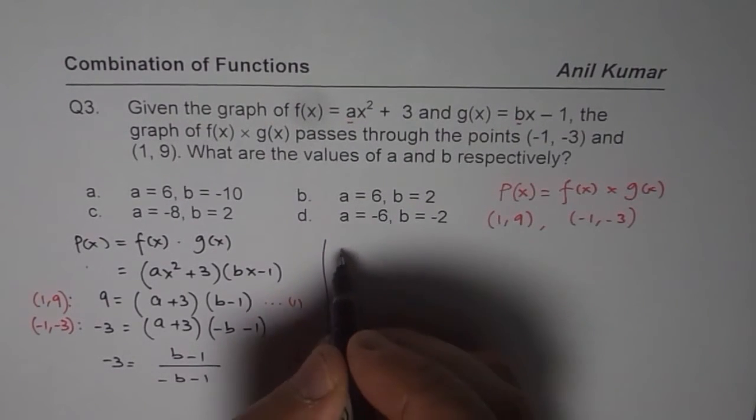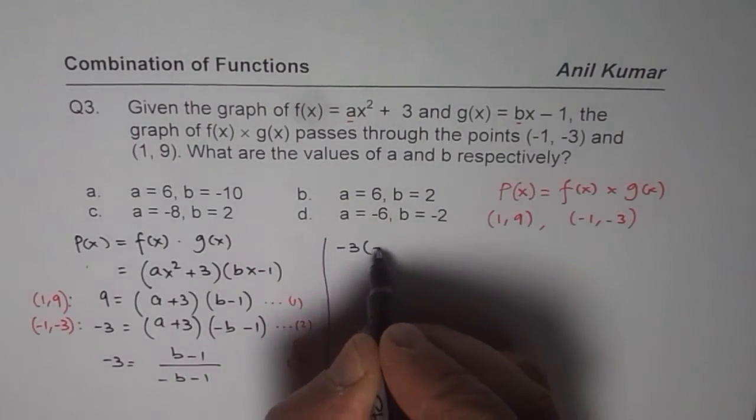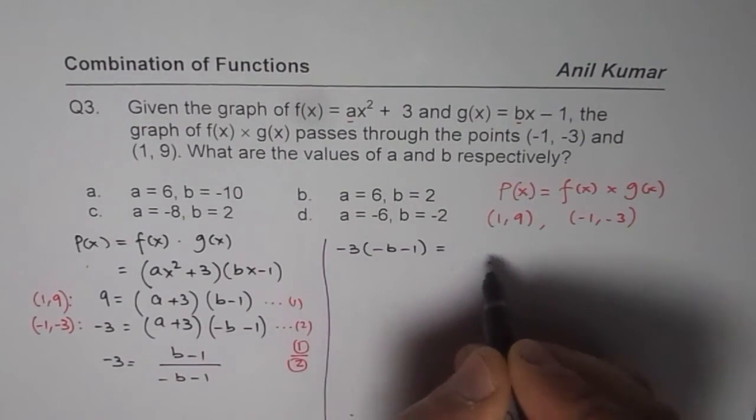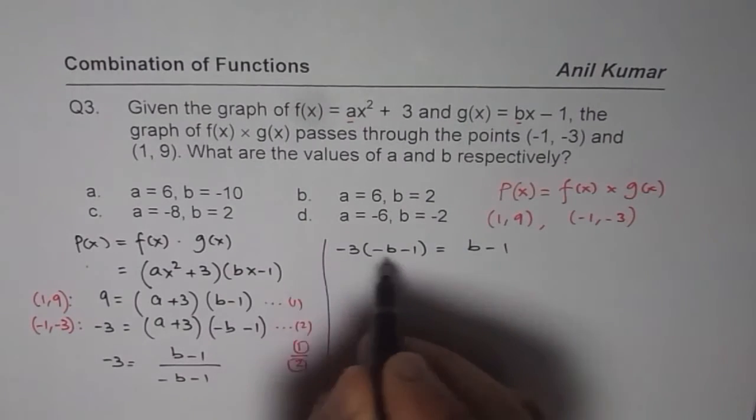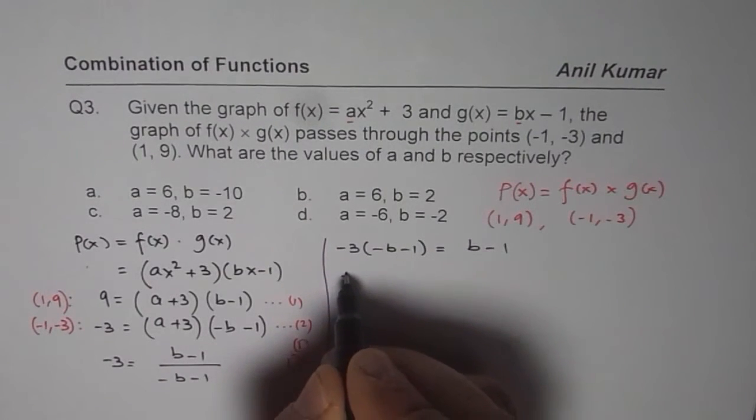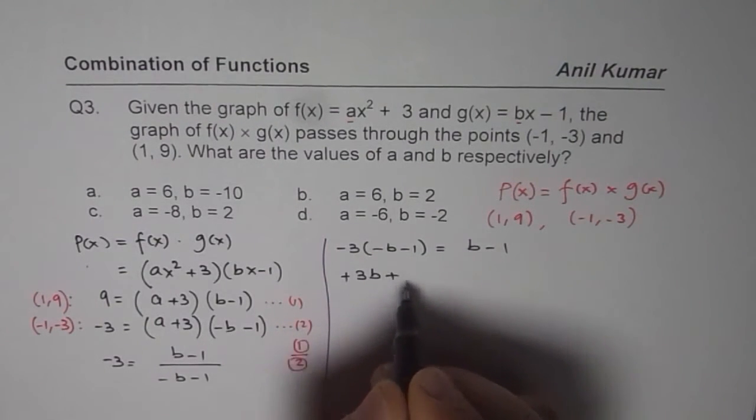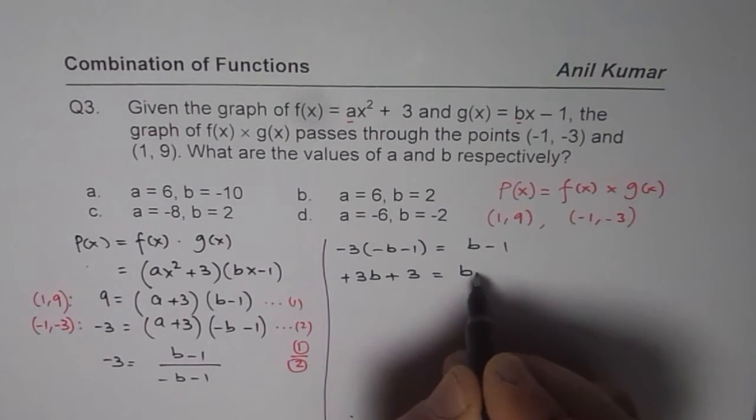So, once you cross multiply, you get minus 3 times minus b minus 1 equals b minus 1. Let us apply the distributive property. So, plus 3b plus 3 equals b minus 1.